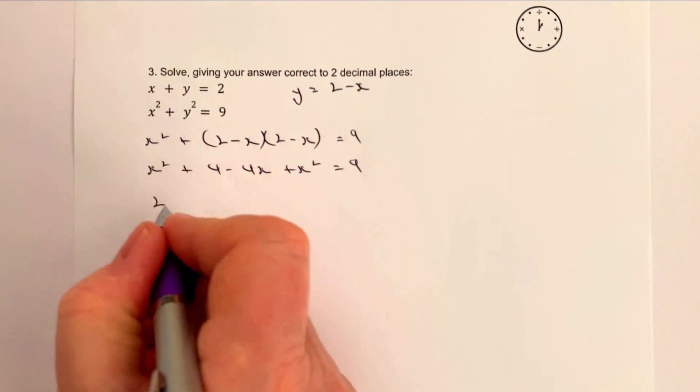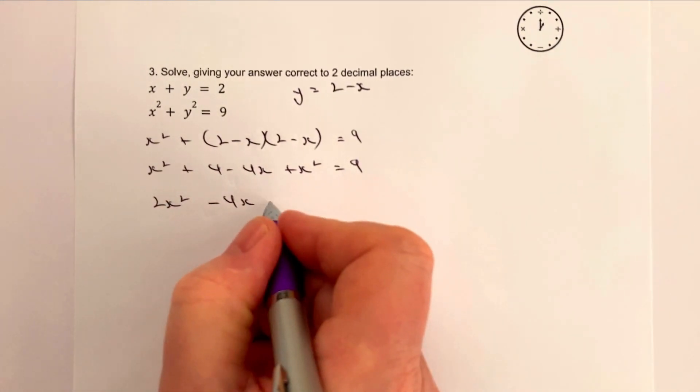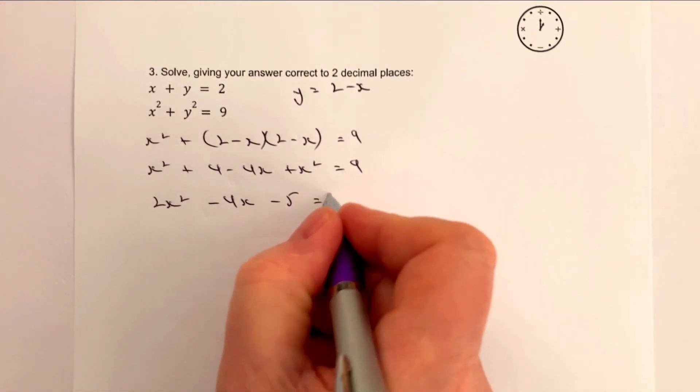Tidy that up a little bit and we're going to get 2x squared minus 4x minus 5 equals 0.